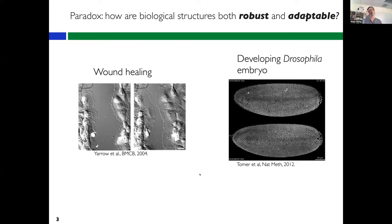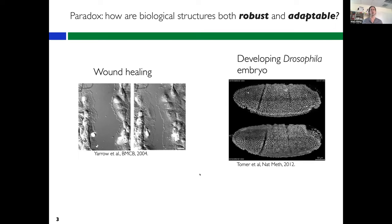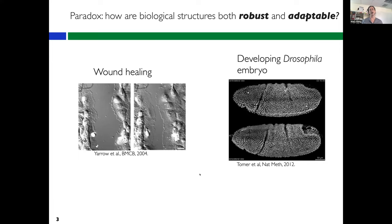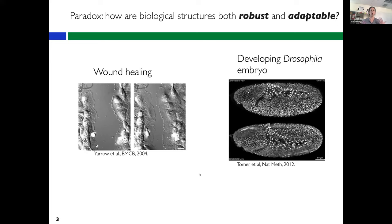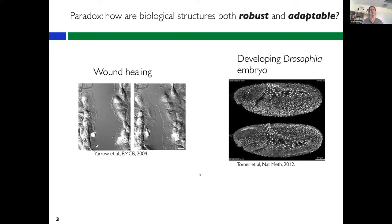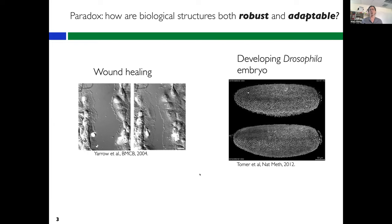One of the ways we think about this broad question is how biological structures achieve this paradox of being both robust and adaptable. There are always trade-offs between needing to adapt and change shape in response to changing signals. For example, on the left is an epithelium that's been wounded and cells detect that change and move to close the wound. On the right is a movie of a developing Drosophila embryo, which has dramatic adaptations balanced with robustness to always happen in the same way at the same time.